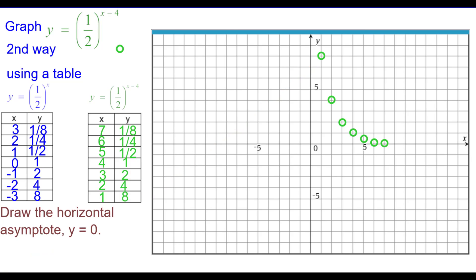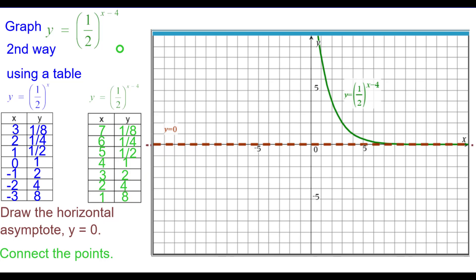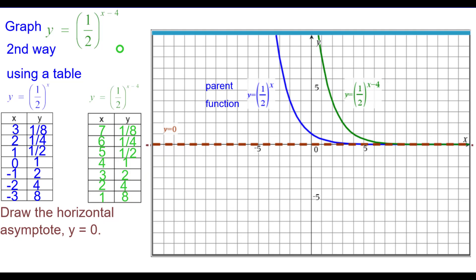Draw in the horizontal asymptote and connect the points. And again, compare it to the parent function.